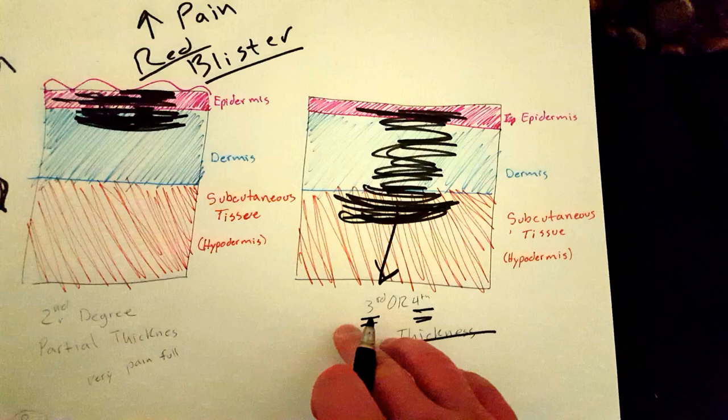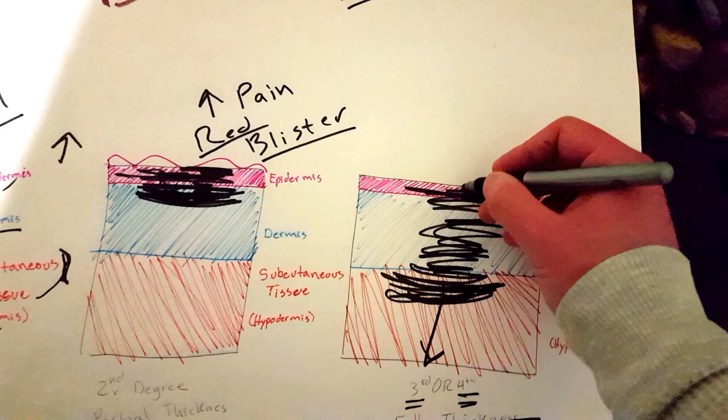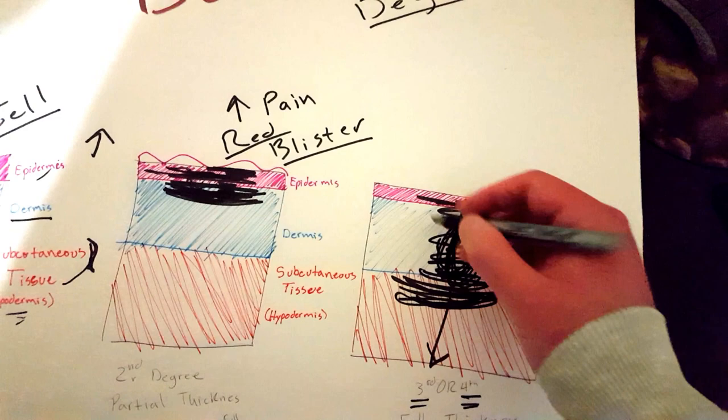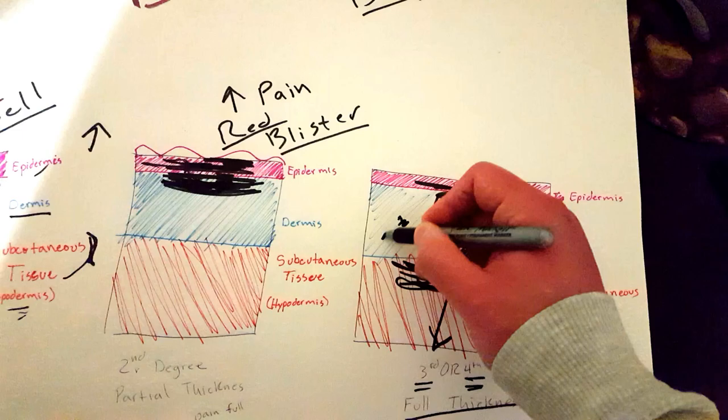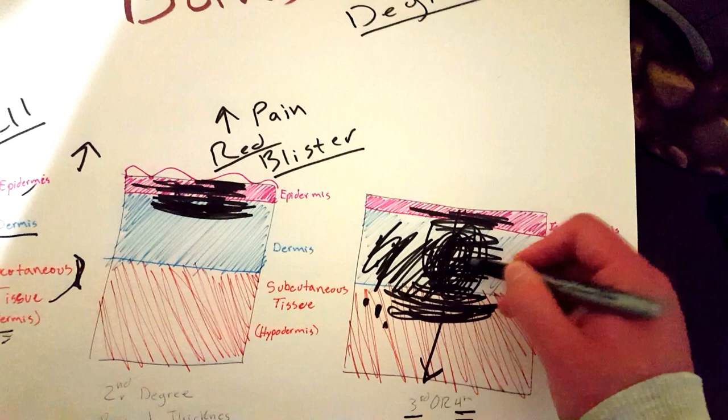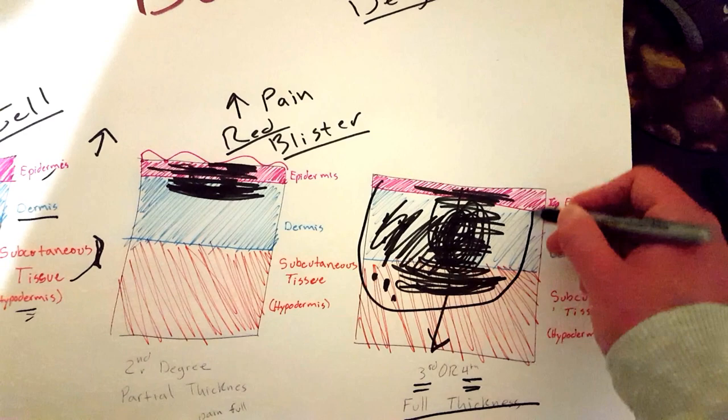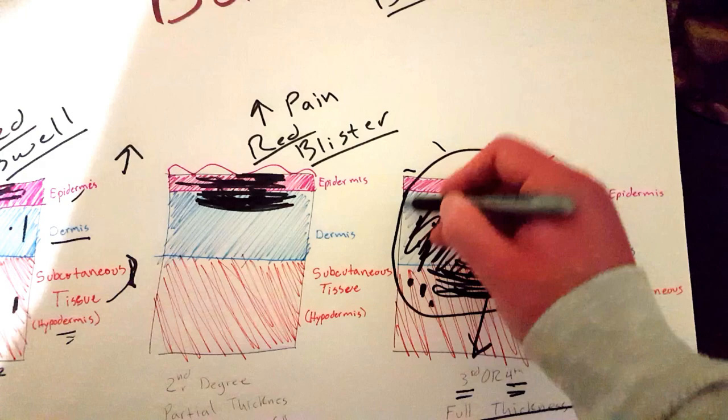With these, you tend to not find a lot of pain in the actual core, the core site of the burn. The reason for this is that all your nerves are in the dermis and even some of the subcutaneous tissue - they're completely burned off, so you can't feel anything. But remember, on the edge of that burn you still have first-degree and second-degree burns, and these will be very painful. So your patient will still have pain, but it might not be in the actual core site.